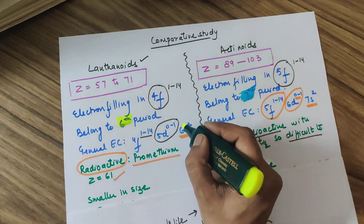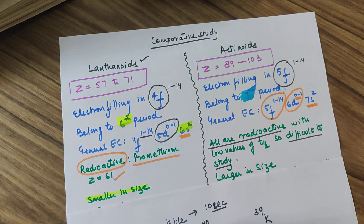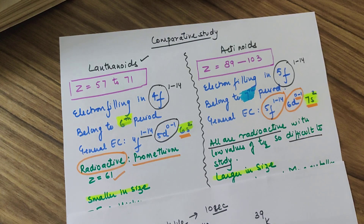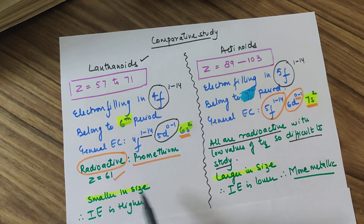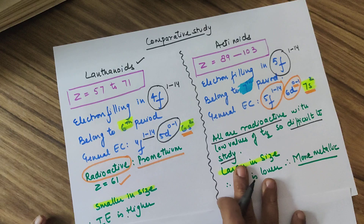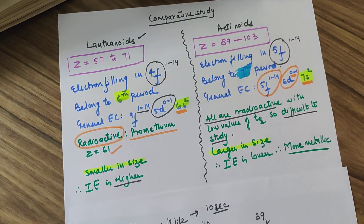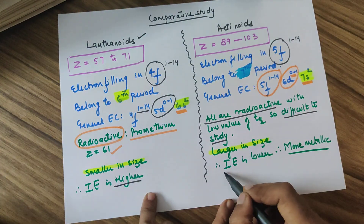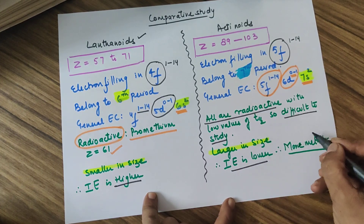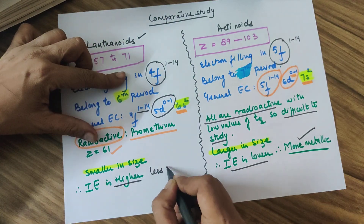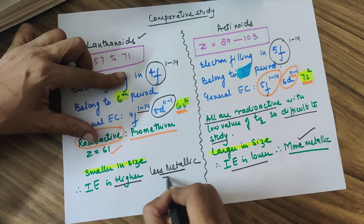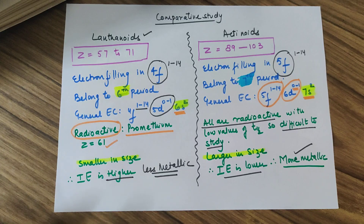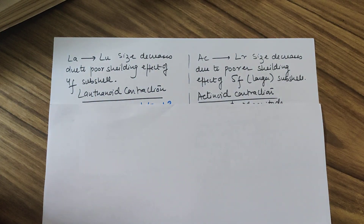Comparing size: lanthanoids are in the sixth shell so their size is smaller, while actinoids (seventh shell) have a larger size. Since lanthanoids have a smaller size, removing electrons is tougher, so their ionization energy is higher. For actinoids, the larger size makes electron removal easier, giving them lower ionization energy — actinoids are therefore more metallic, while lanthanoids are comparatively less metallic.